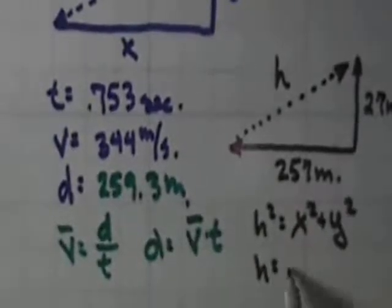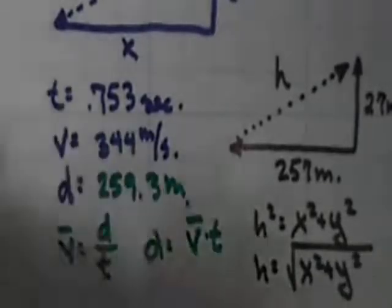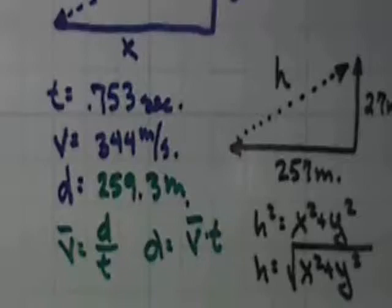So the hypotenuse is equal to the square root of x squared plus y squared. Plug that into your calculators and see what you get.